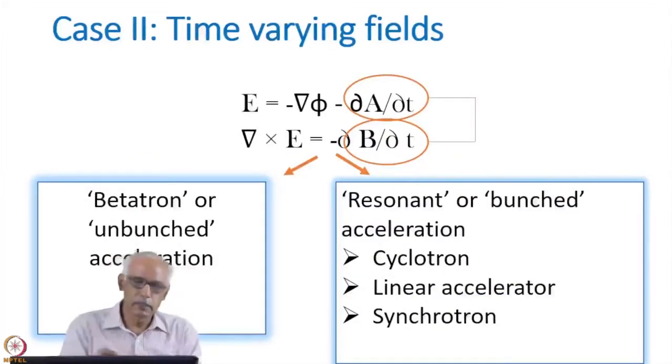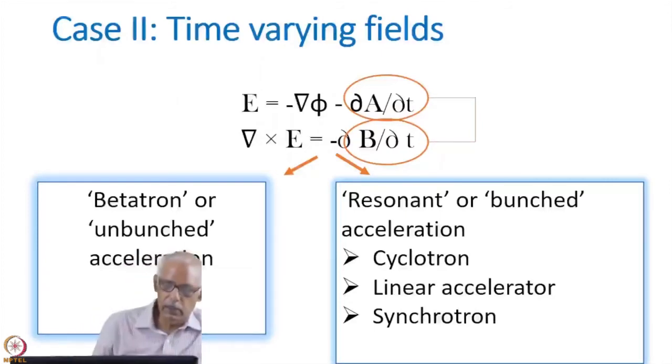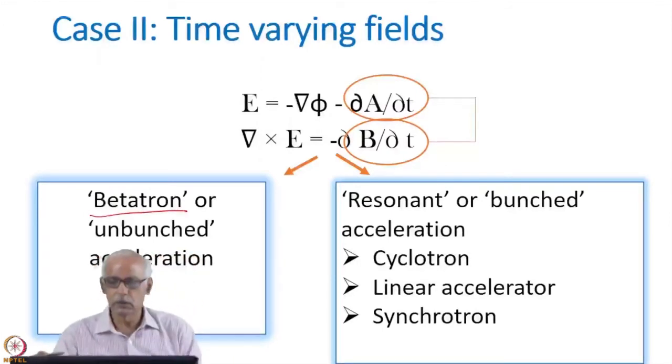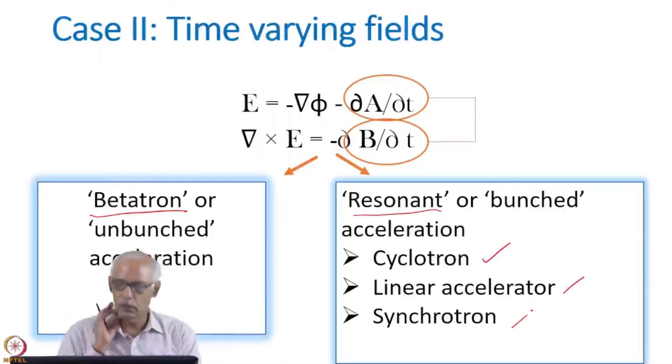If the rate of change of magnetic field is used for acceleration, then that accelerator is called betatron. And if you are using changing electrostatic field, then they are called resonating because you have to resonate the particles with the actual frequency and the phase, etc. And they are called cyclotrons. In this category, these accelerators come into picture.